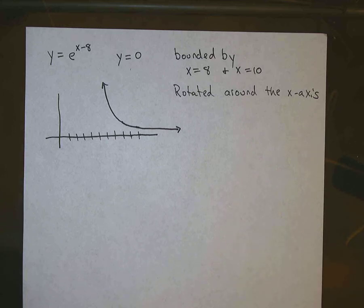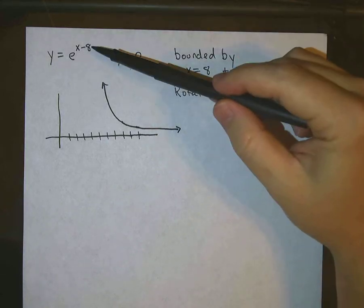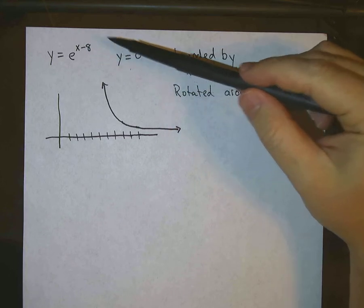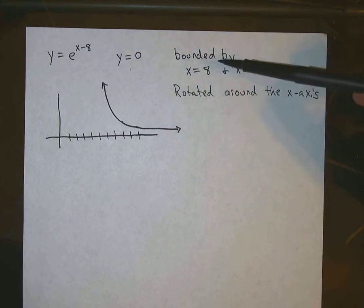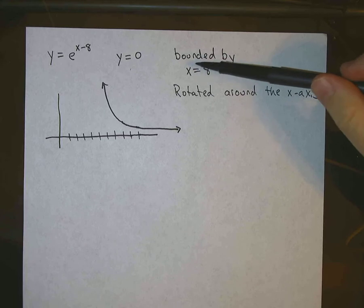Okay, in this problem we're taking the function y equals e to the x minus 8 bounded by y equals 0 and the x values of 8 and 10.